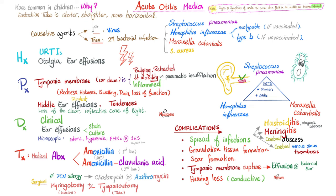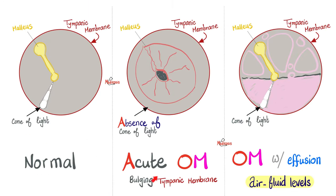Complications of acute otitis media include spread of infection to the mastoid bone (mastoiditis), meningitis, brain abscess, cerebral venous sinus thrombosis, abscess in the ear, scar formation, tympanic membrane rupture with visible effusions in the outer ear, and conductive hearing loss. In acute otitis media the tympanic membrane is bulging, and the normal cone of light is absent due to severe bulging of the eardrum.